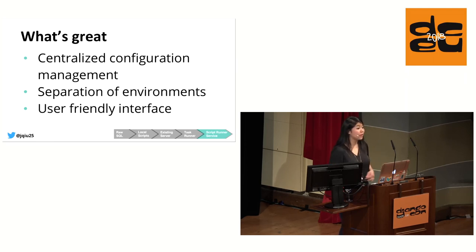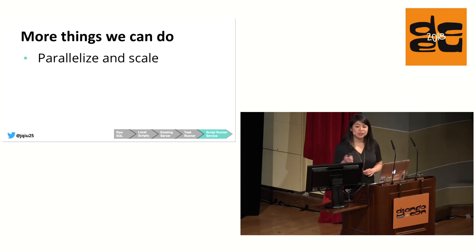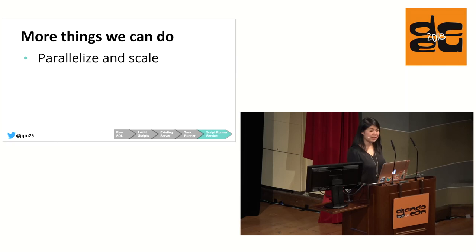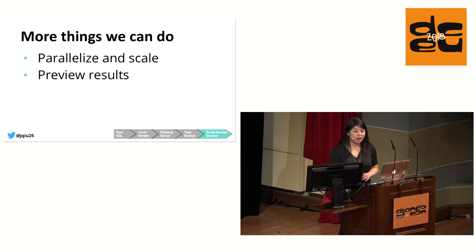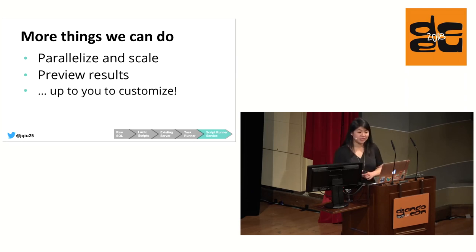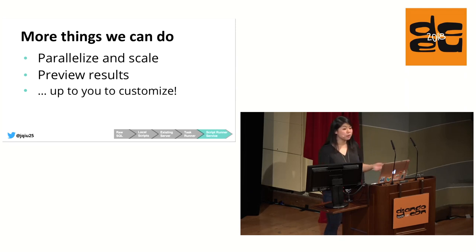And the amazing thing about the script runner service is that it doesn't have to stop there — there's even more we can do. For example, if a lot of engineers need to run scripts at the same time as your team grows, you can parallelize and scale your instances. If you want to preview the effects of your scripts on the database before committing changes, you could build that preview mode functionality into ScriptRunner. Ultimately, it's up to you to decide how you want to customize your own version of ScriptRunner.